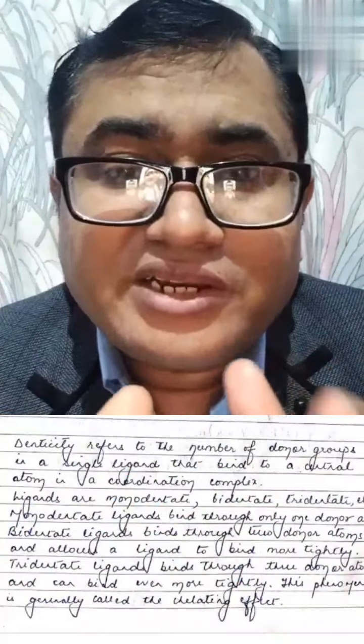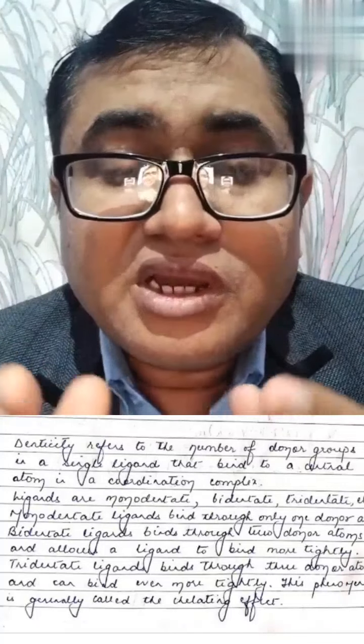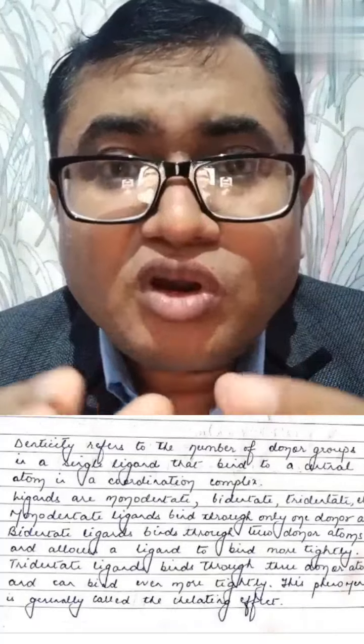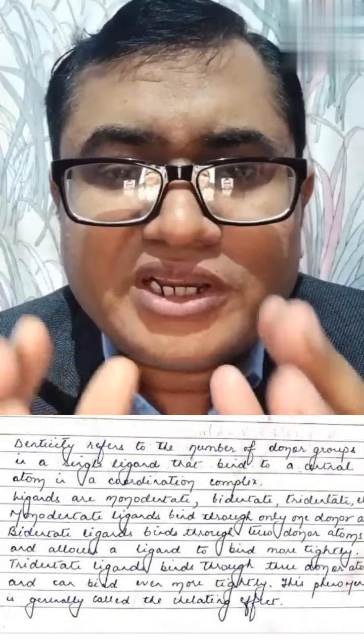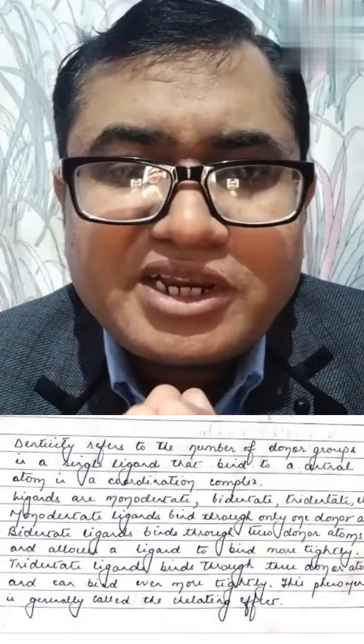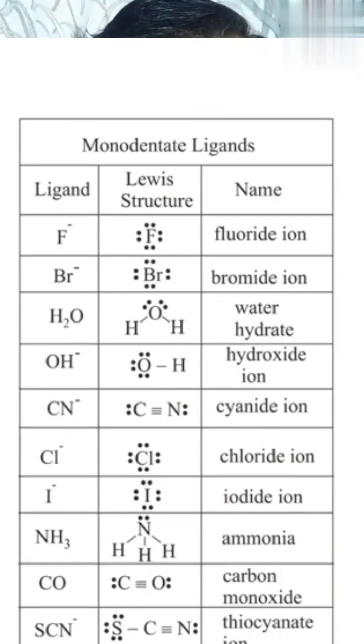An important technical term is denticity. Denticity means the number of ligating atoms or donating atoms that a ligand has. If a ligand has only one donating atom or one ligating atom that donates a lone pair to the central metal atom and forms a coordinate bond, that kind of ligand is called a monodentate ligand.